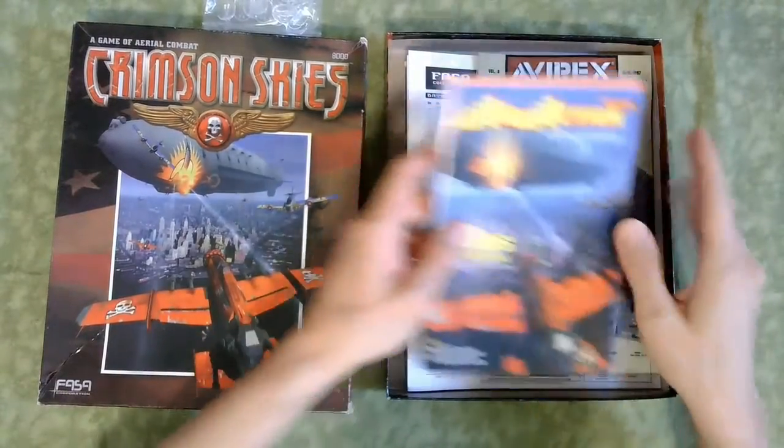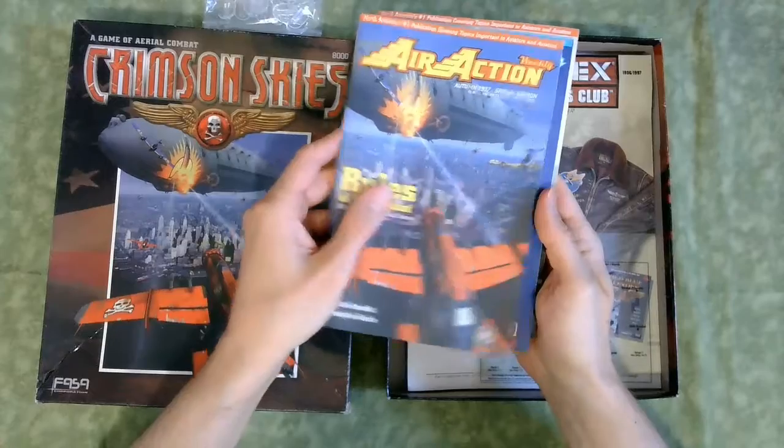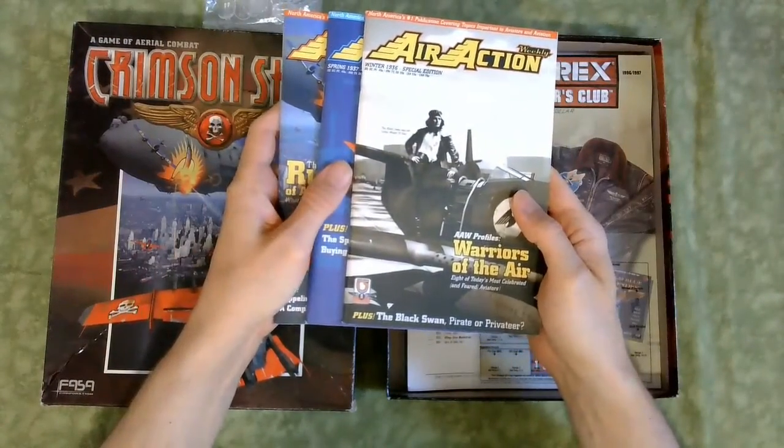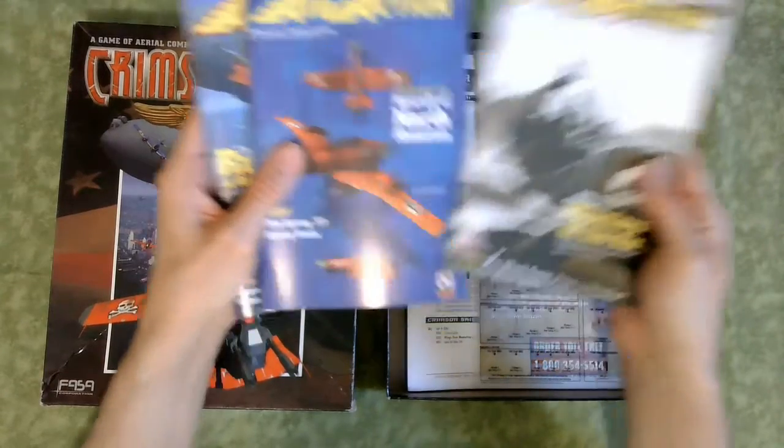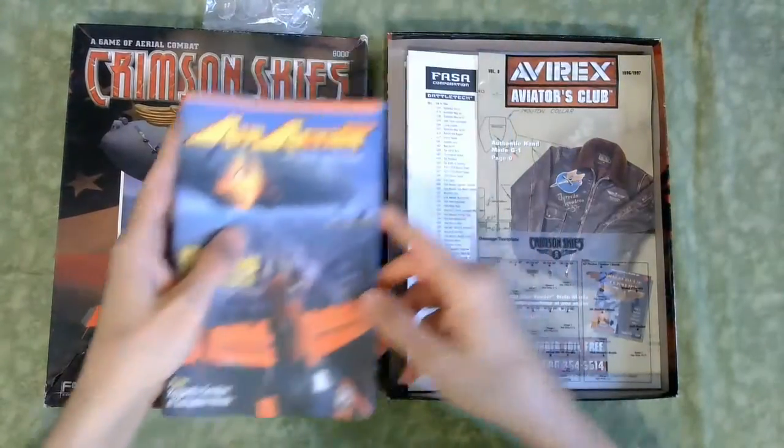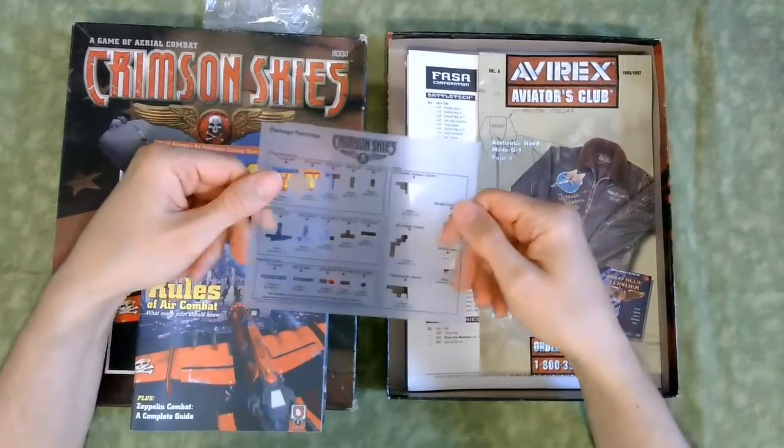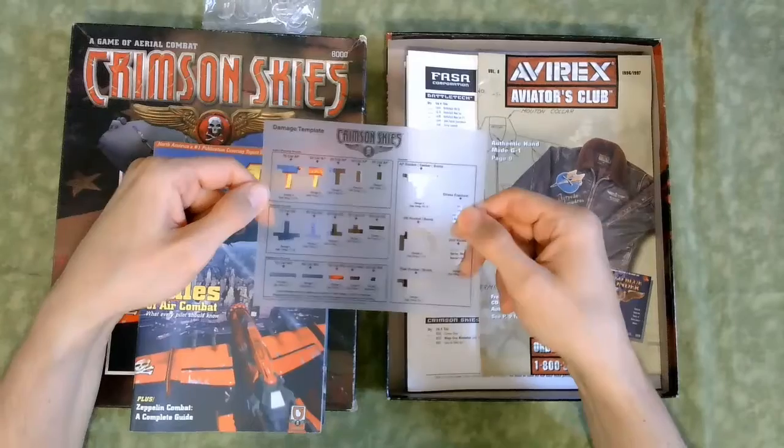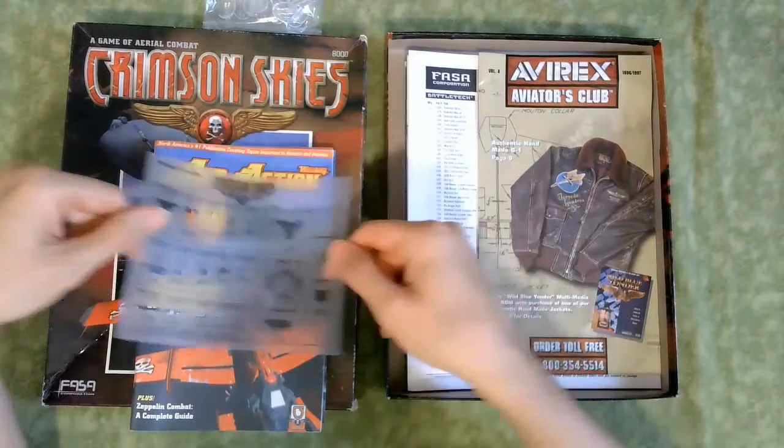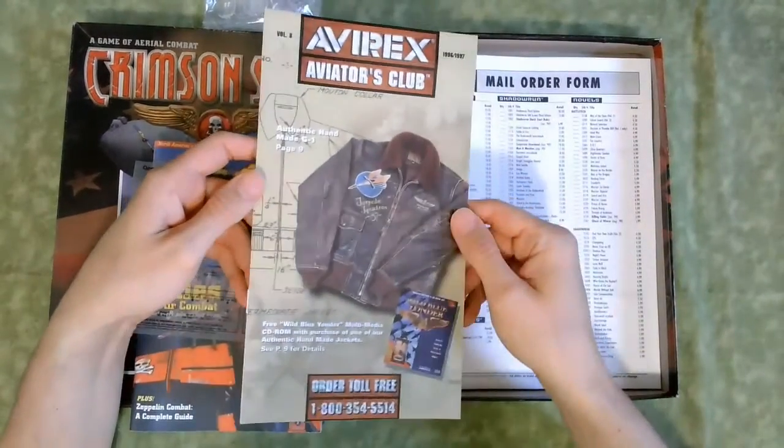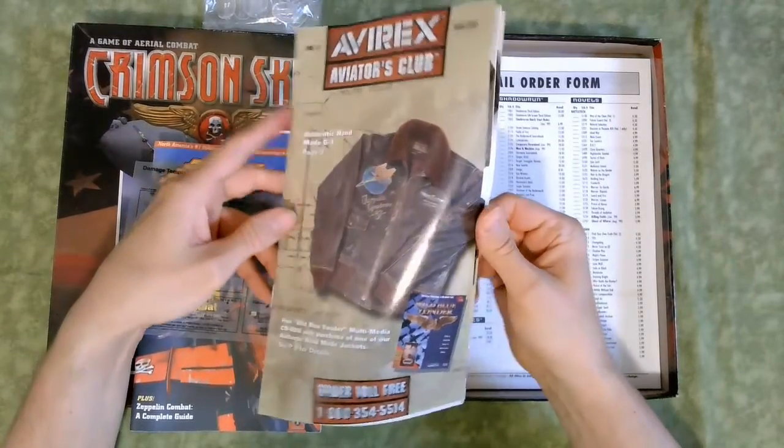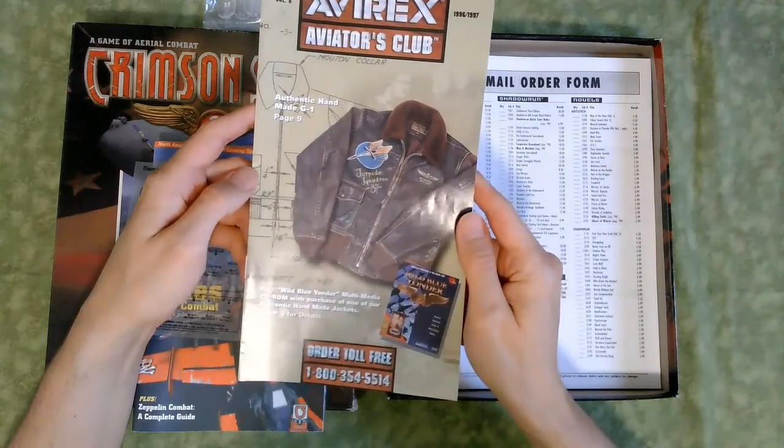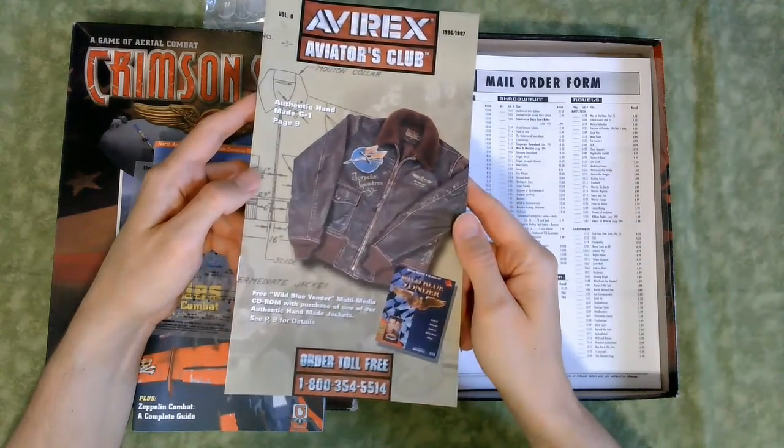And then we have the actual rule book. A guide to all the aircraft. A guide to the personalities in this game. Yes, that's a thing. And then we have our first template. This is the shooting template. When you do damage, you do damage to the boxes on the grid that represents your aircraft using this template. It did actually come with the Aviator's Club catalog for people who wanted to buy Aviator's jackets or Aviator's glasses.